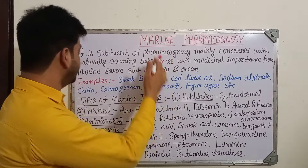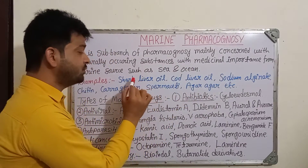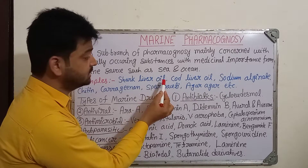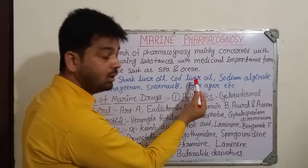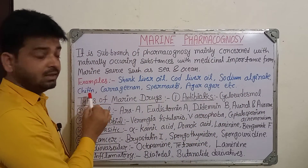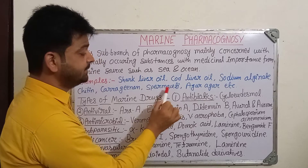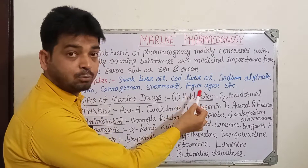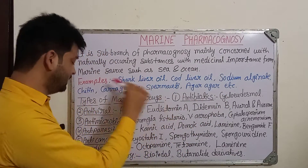Let us see some examples. Shark liver oil - shark is a fish found in the sea and ocean; from the liver of the shark we isolate and express the oil, and that is called shark liver oil. Cod liver oil - cod is also a fish and the oil obtained from it is another marine oil. Sodium alginate is also obtained from marine sources. Chitin is one of the cell wall constituents. Carrageenan, spermaceti, and agar-agar - which we have already discussed in carbohydrate drugs - is also one of the algae products. These are all examples.